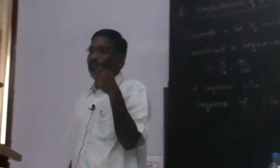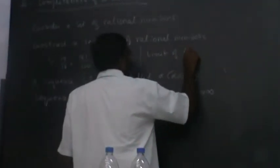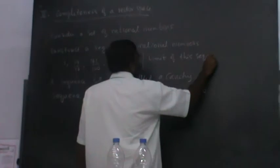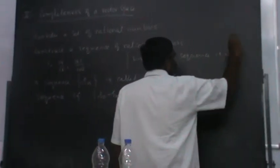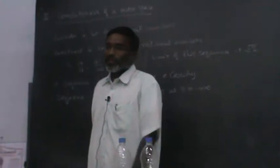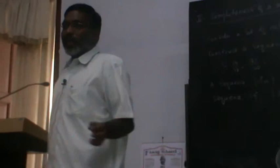Now you ask a question: what is the limit of the sequence? The limit point of the sequence — if you look at this one — the limit of the sequence is square root of two. But square root of two is not a rational number. So if you take the set of rational numbers, I can construct a Cauchy sequence in rational numbers whose limit point is not a rational number.